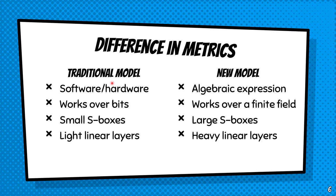Now we compare the traditional model with the new model. In the traditional model, we make symmetric key primitives over software or hardware — these work over bits, bytes, or 32-bit words, i.e., small extension fields. As a result, our S-boxes are also quite small, and it is better if they respect the platform's architecture. On the linear layers, we want them to be light as well — light in XOR costs — with good diffusion but minimal XOR cost.